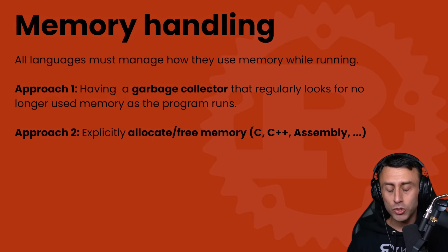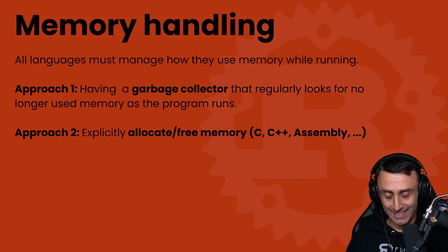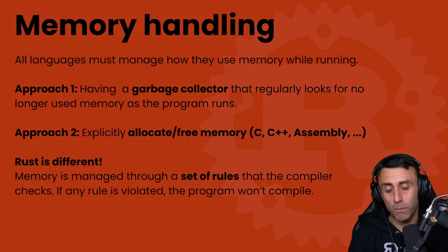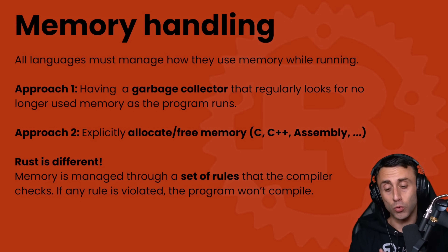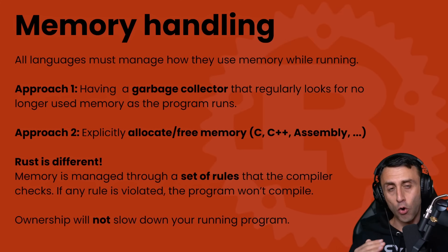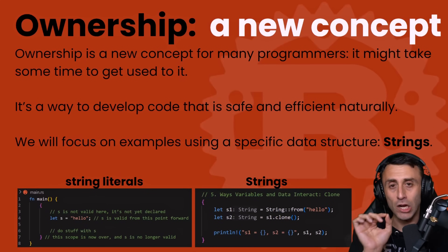Explicit memory management has a cost: it's harder to code because you need to handle all memory manually. If you've ever tried to allocate and free memory in C, you probably didn't like that. Rust is different — in Rust, memory is managed using a set of rules that the compiler checks at compile time. If any rule is violated, the program will refuse to compile. Ownership will not slow down your running program; it's a concept, a way to code safely and efficiently.